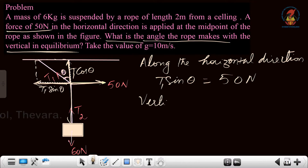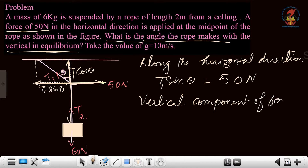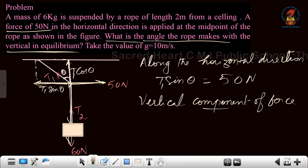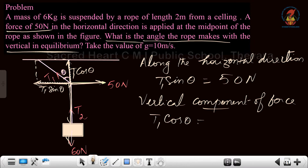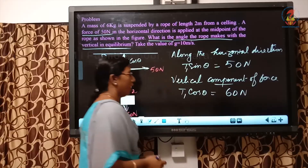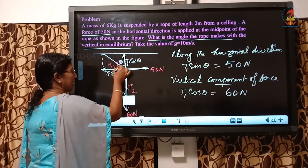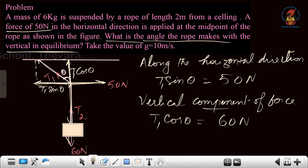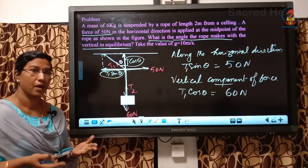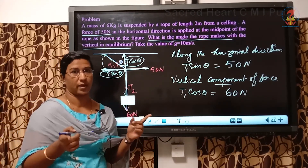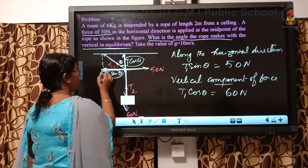Taking the vertical component of force, 60 Newton is acting downwards and from this point T1 cos theta is acting upwards. So we can write T1 cos theta equals 60 Newton. I got two equations. I am going to divide equation 1 by equation 2. T1 sin theta divided by T1 cos theta equals 50 by 60. T1 and T1 cancel. Sin theta by cos theta is tan theta, so tan theta equals 50 by 60.